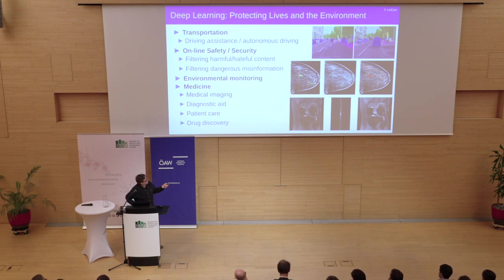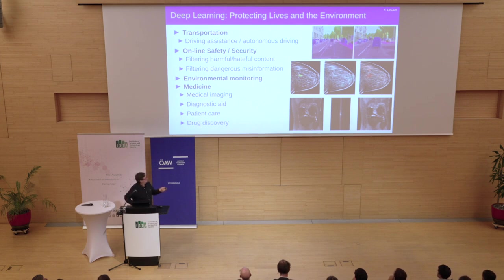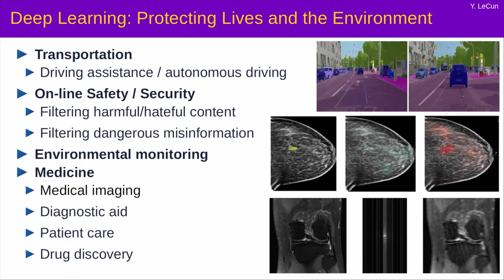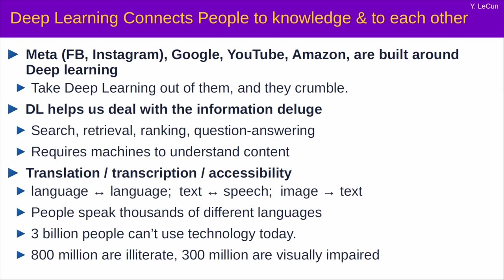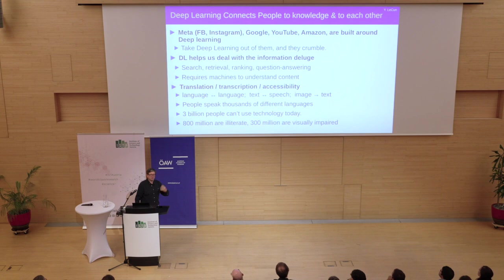This is an example from some of my colleagues at NYU who have been using convolutional nets for detecting tumors in mammograms, so breast cancer. And also another group here at NYU in collaboration with FAIR, Meta, for accelerating the process of collecting MRI images. But the biggest use of deep learning today is for things like online services, search engines, social networks, ad ranking also.